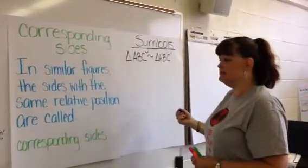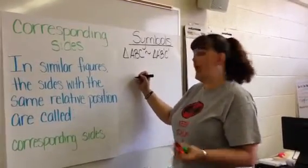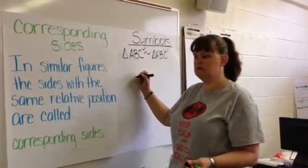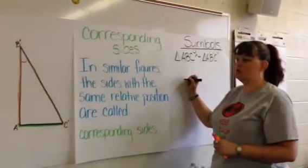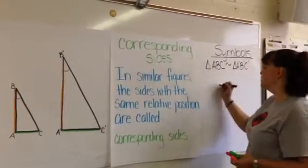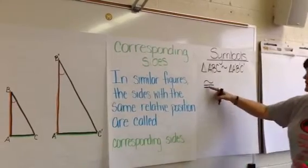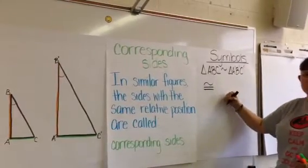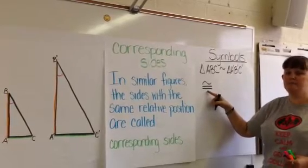You may see that something is congruent. We have talked about that angles, you noticed in the activity that the angles, corresponding angles, were congruent or had the same measure. So, congruency is represented with an equal sign and a squiggle on the top. That means they are congruent, or the same measure.